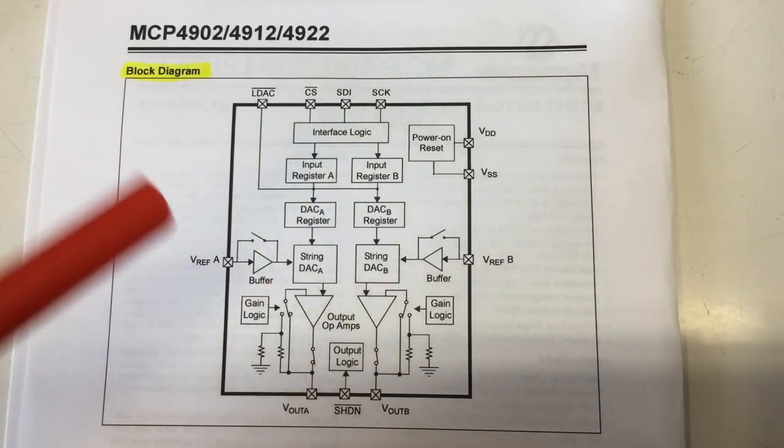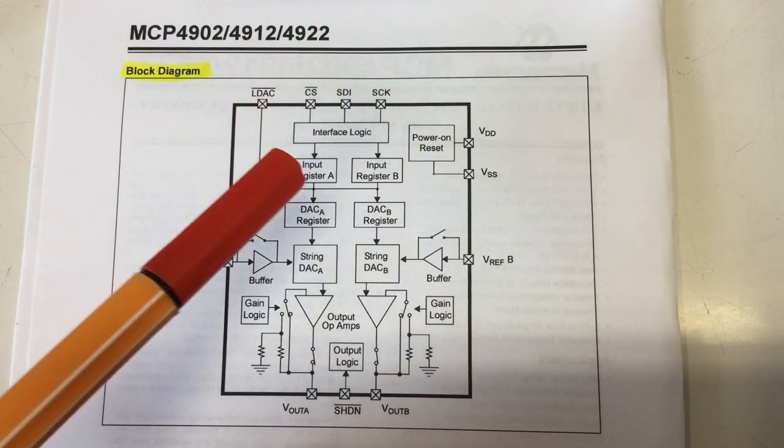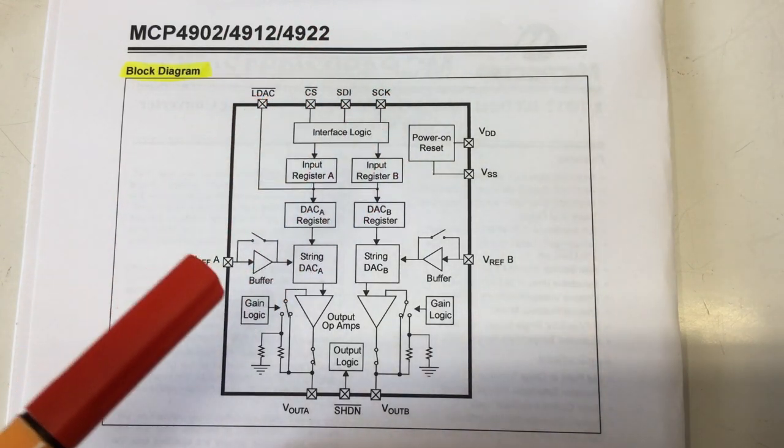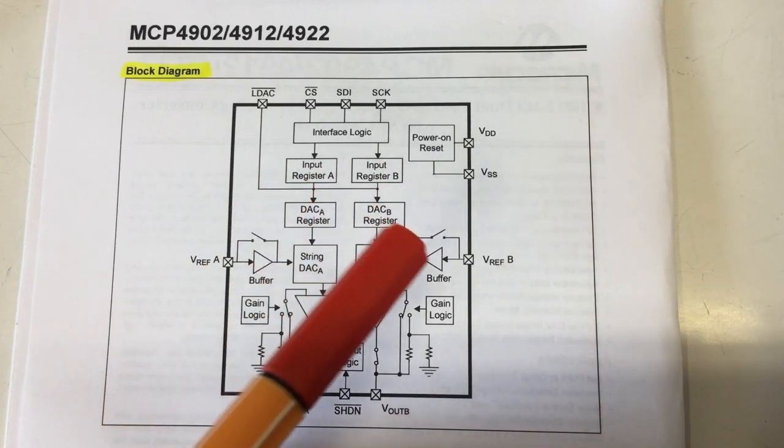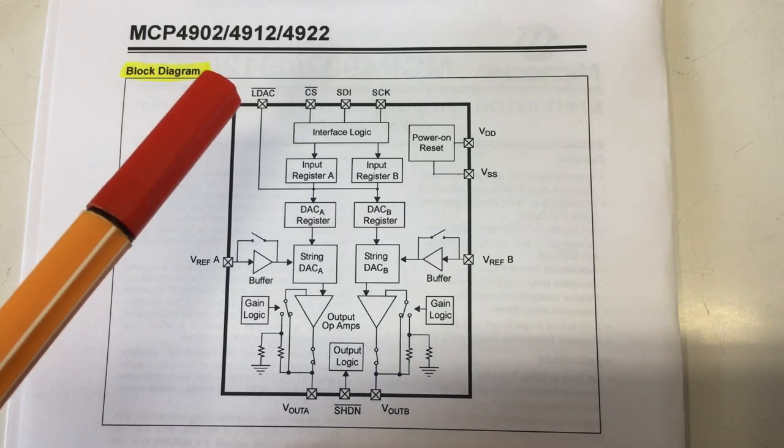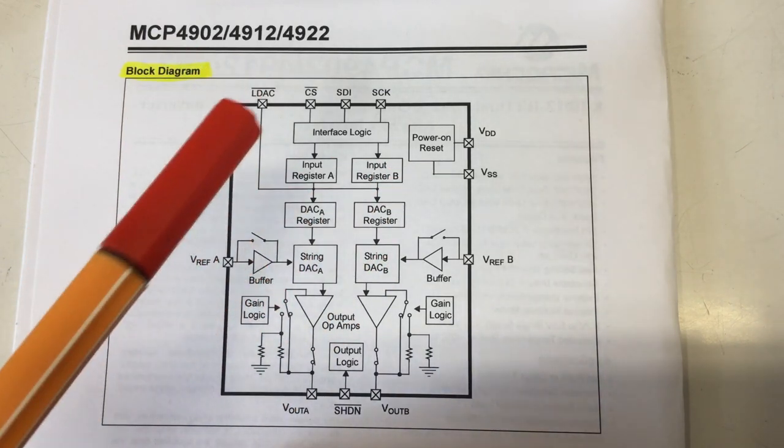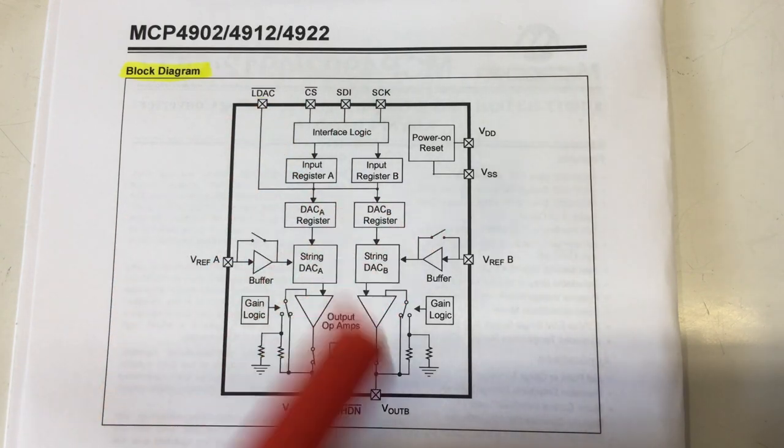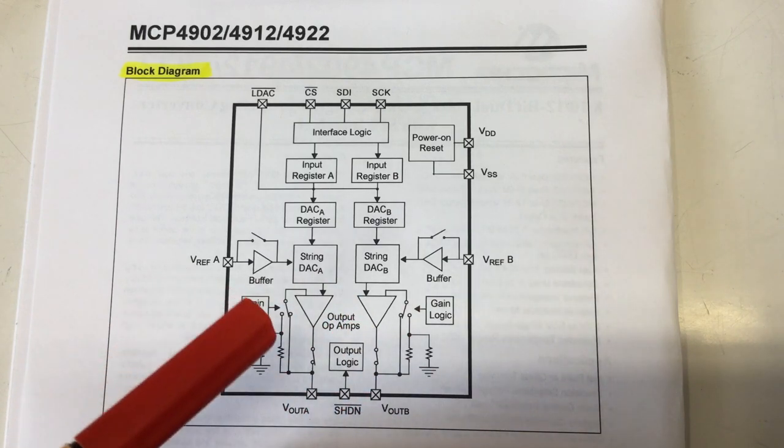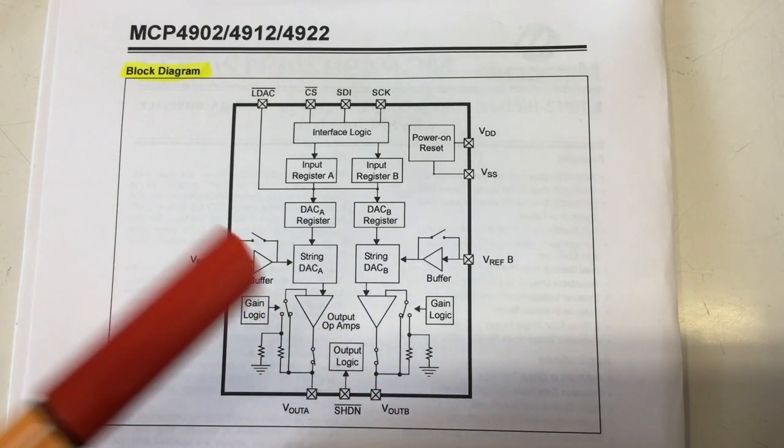The internals are very similar to the 4822. You have your SPI interface here loading these two registers here. And you have your second row of registers controlling the DACs. And you have that LDAC pin controlling the data transfer from the SPI controlled registers to these. You also have the output amps with the gain logic times one, times two, and the output switch. So no problem.